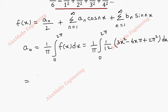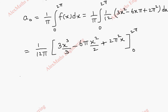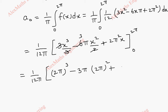Taking 1 by 12 outside we get 1 by 12 pi. The integration of 3x squared is 3x cubed by 3, minus 6 pi is a constant so integration is x squared by 2, and 2 pi squared is a constant times x. We close the bracket and substitute upper limit then minus lower limit. Substituting the upper limit, the first term is 2 pi whole cube, minus 3 pi times 2 pi squared plus 2 pi squared times 2 pi. Using the lower limit every term is 0.